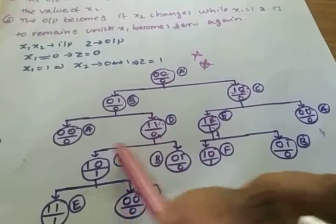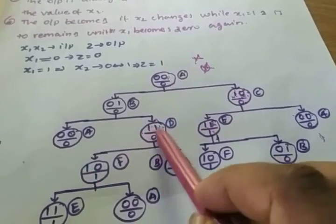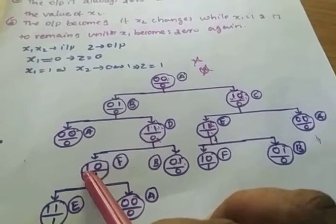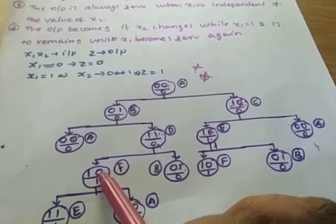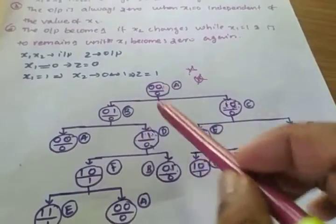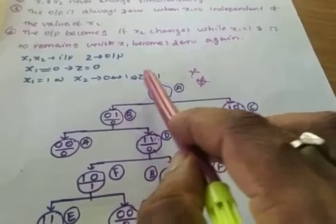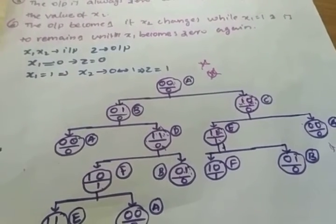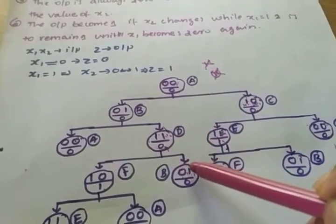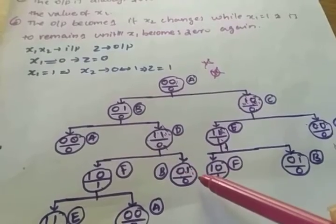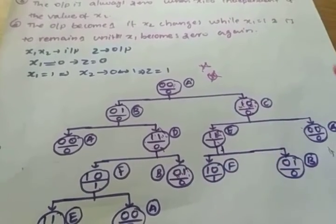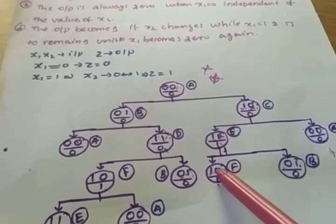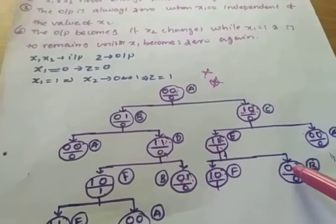For the 1,1 condition: first 1 keeps as is, second 1 changes to 0 giving 1,0 — output 1 (x1=1, x2 transition from 1 to 0). First changes, second keeps: 0,1 — output 0 since x1=0. For the state with 1,0 and x2 changing from 0 to 1: gives 1,1 with output 1 (x2 transitions from 0 to 1 while x1=1). The other path gives 0,0 with output 0 (x1=0).